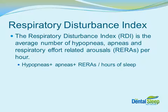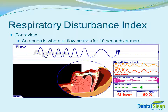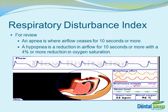The RDI is calculated by looking at the total number of hypopneas, apneas, and RERAs, and then dividing that by the total hours of sleep. Recall that an apnea is where airflow ceases for 10 seconds or more. In this picture, we see the apnea represented at the top portion of the airflow, where the line is straight, indicating that there is no airflow. A hypopnea is a reduction in airflow for 10 seconds or more, accompanied with a 4% or more reduction in oxygen saturation. In this graph, we see the chair-like effect of the airflow, reduced by 50%. When accompanied by a blood oxygen level drop of 4% or more, that is then classified as a hypopnea.